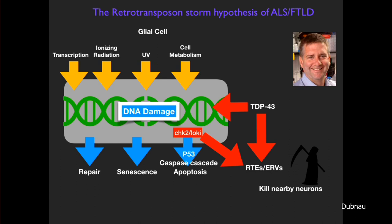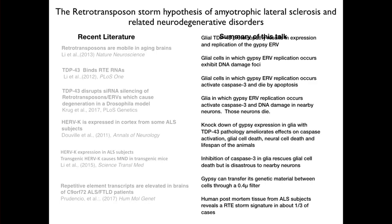TDP-43 proteinopathy is somehow causing DNA damage, and cell-by-cell it is the cells where GYPSY is replicating where we see those DNA-damage foci. I still wonder whether there may also be some effect — perhaps not the LTR retrotransposons but the LINE-like elements — that may be causing the DNA damage. I think I've essentially told you the whole summary.